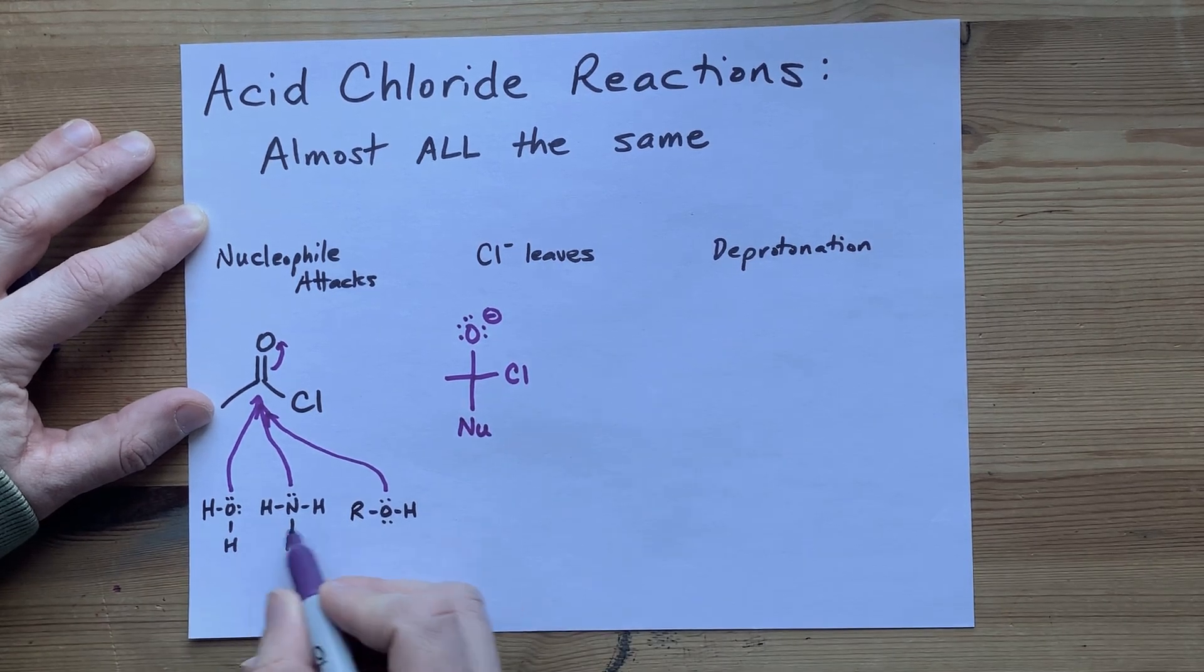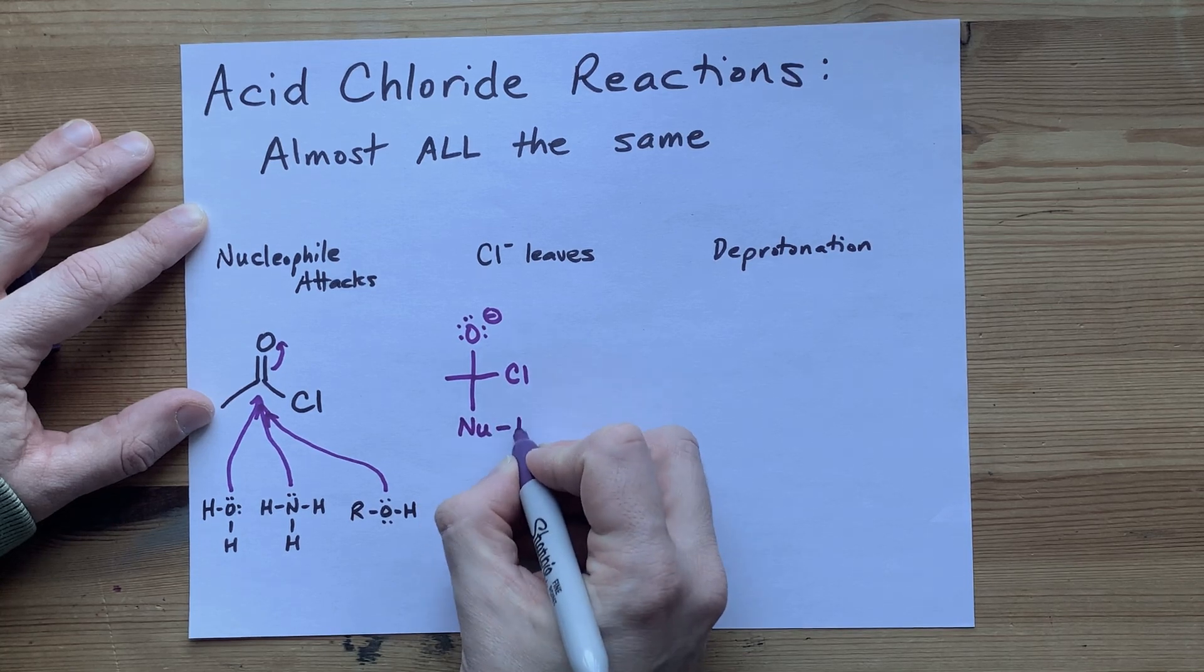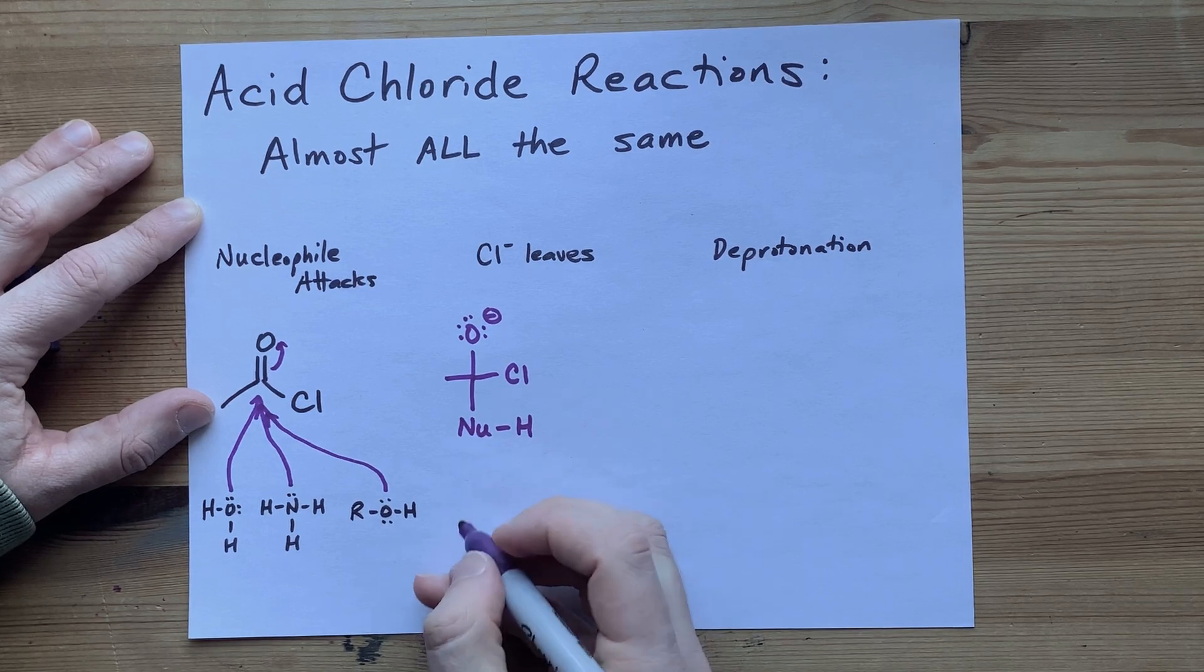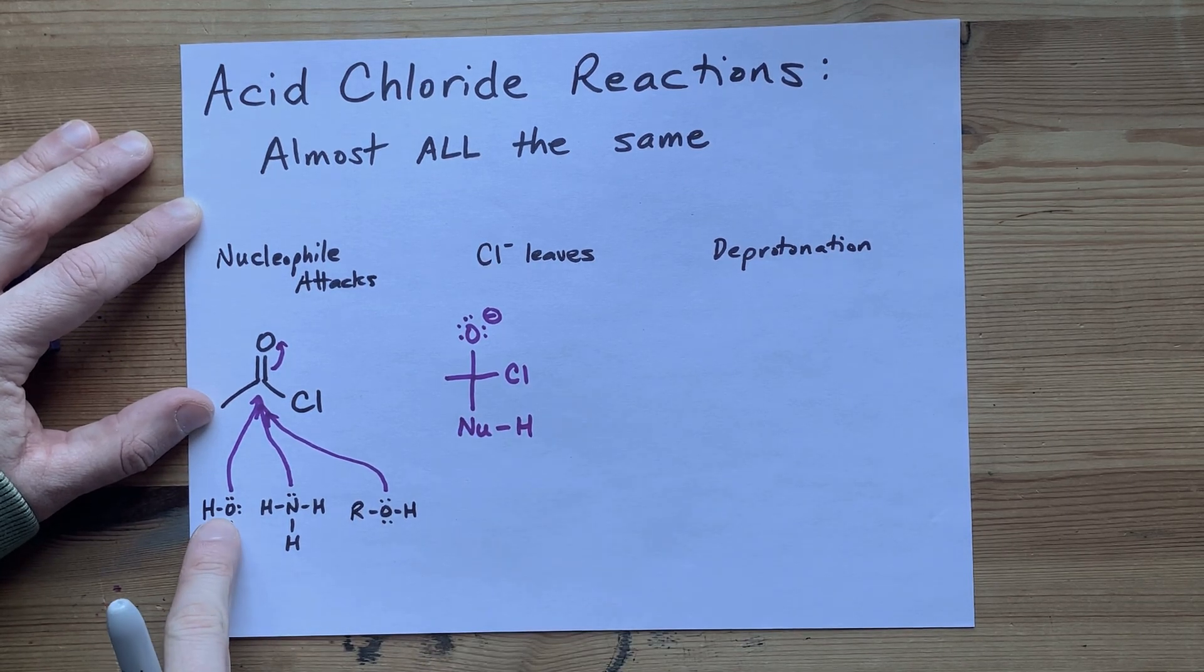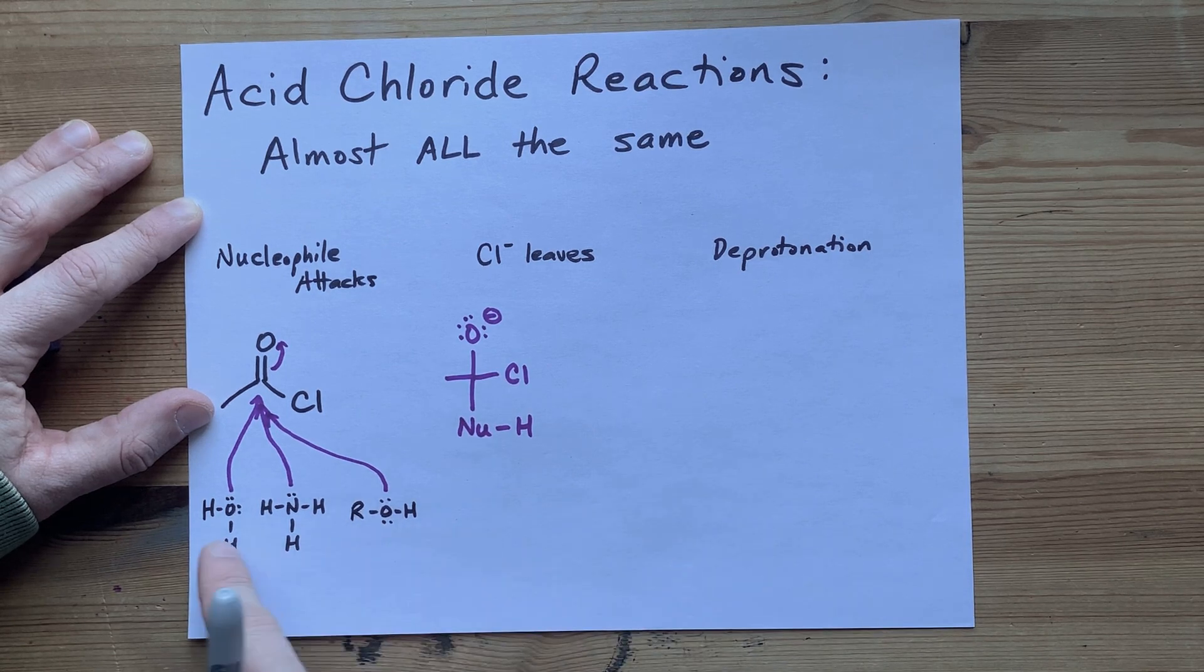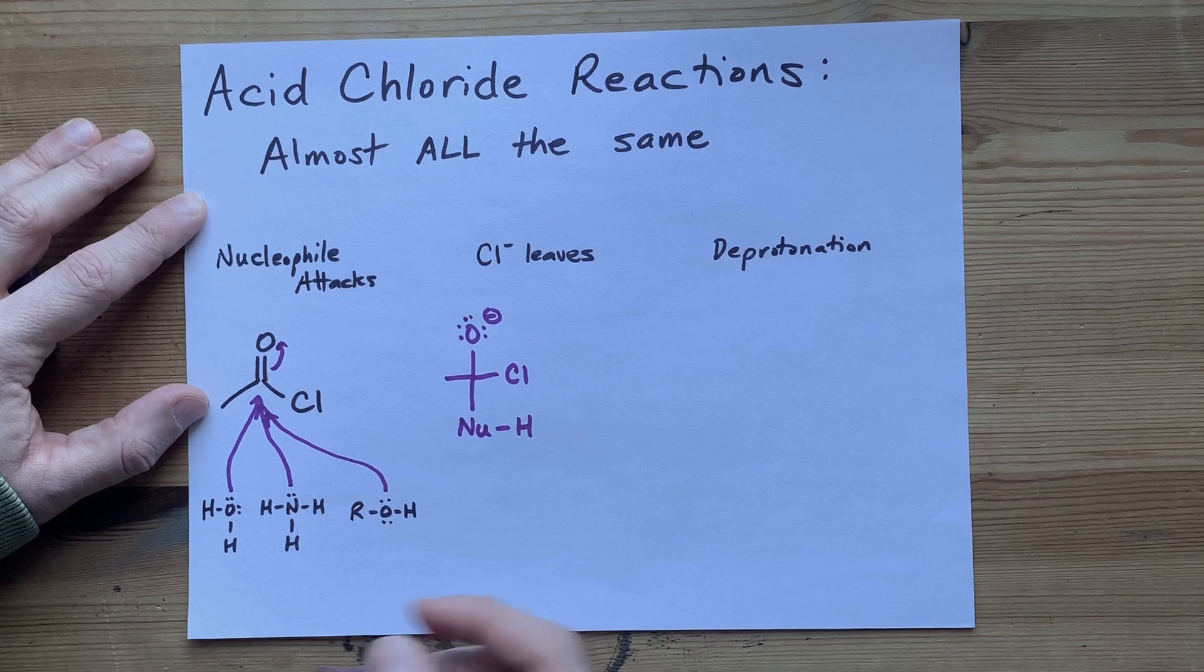Now, the other thing about all of these nucleophiles that end up reacting is they all have an H attached to it. So you have your nucleophilic molecule, and there has to be an H on it somewhere. All of these electronegative atoms had a formal charge of zero - they are neutral molecules, they all have a formal charge of zero.